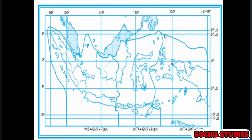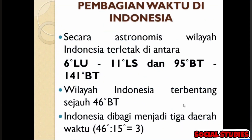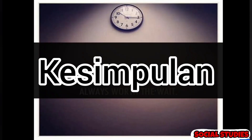Tadi dikatakan setiap 15 derajat perbedaan waktunya 1 jam. Jadi Indonesia dibagi menjadi 3 daerah waktu, berdasarkan selisih bentang bujur timur sejauh 46 derajat dibagi 15 derajat — hasilnya sekitar 3 koma sekian, dibulatkan menjadi 3. Jadi perbedaan waktu di dunia itu adalah 24 jam, sedangkan di Indonesia 3 jam.